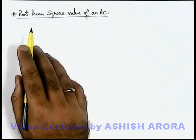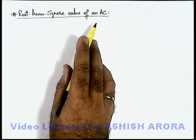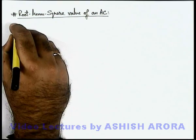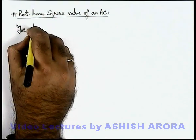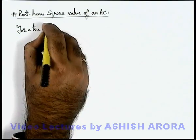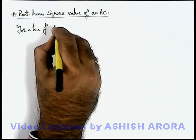Let us now study the root mean square value of an alternating current. As we already know that, for a time function which is given as f of t,